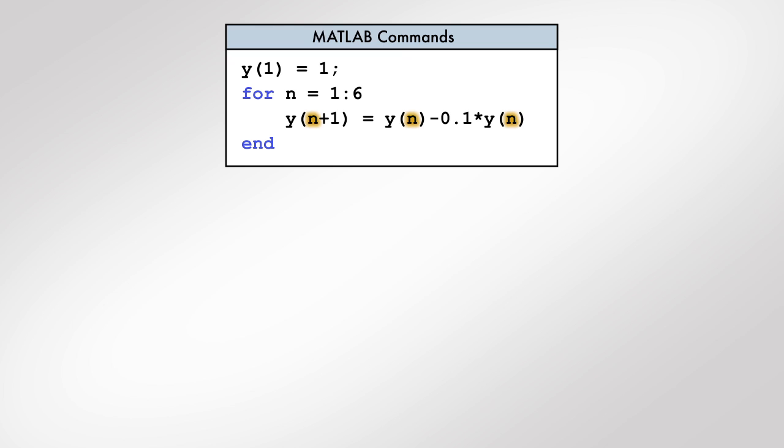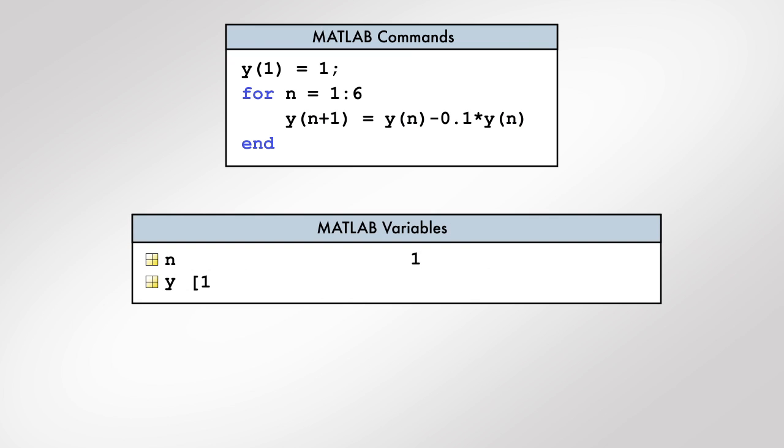In this example, we use the loop variable to index into the vector y. When this for loop is first executed, the value of the loop variable n is 1. In every successive iteration, the value of the loop variable is automatically incremented by 1 and the commands in the body are executed again.